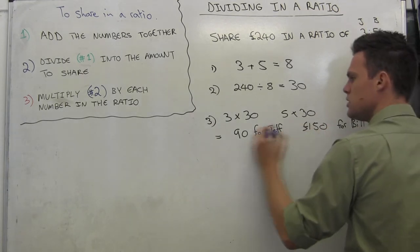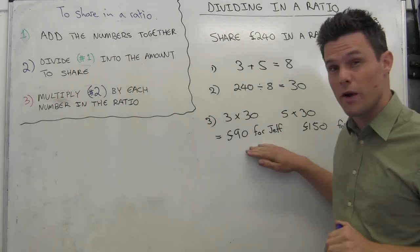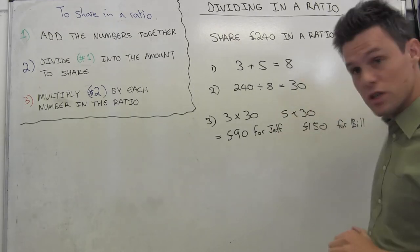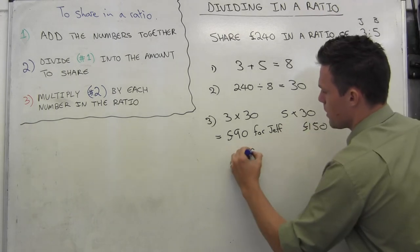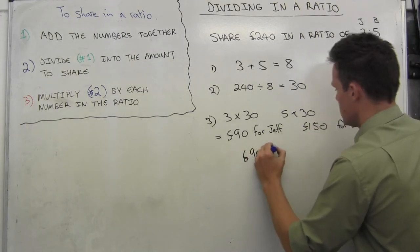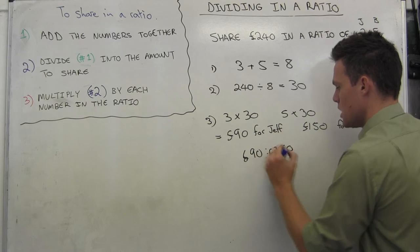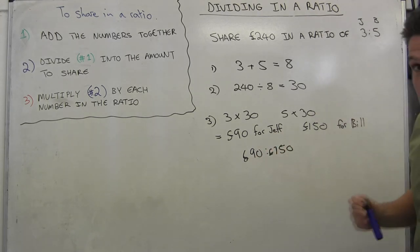Now please note, my answer is not in a ratio format. The question is in a ratio. My answer is not in a ratio. You couldn't write, for example, 90 pounds to 150 pounds, because mathematically that actually doesn't make sense.